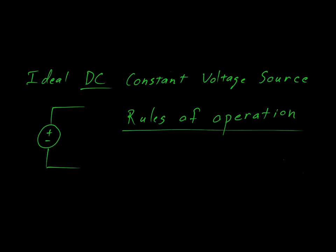You may have seen this symbol before. This is the symbol for an ideal direct current constant voltage source. Actually, it's a concept, a tool that we use to talk about electricity and to perform circuit analysis. First, let's talk about the rules of operation.